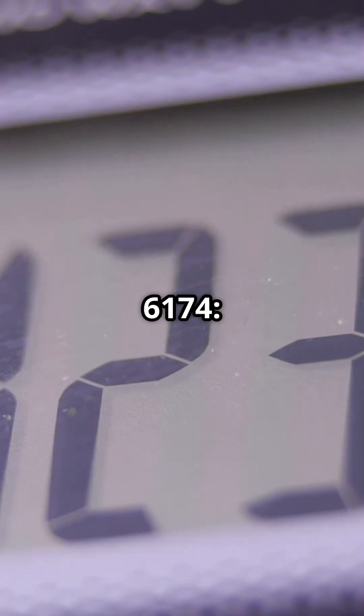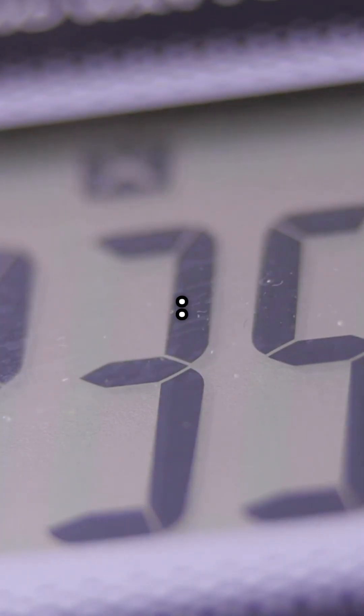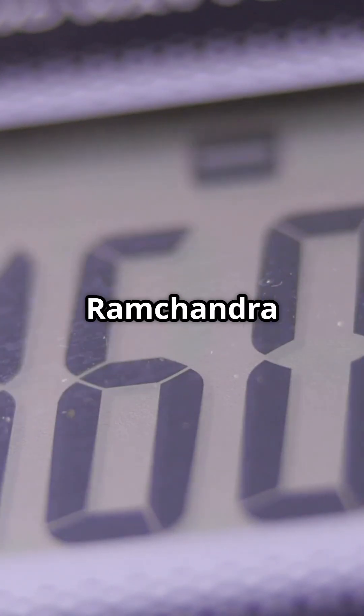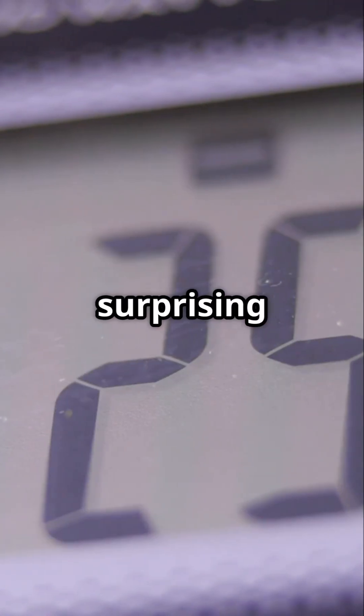The number 6174, Kaprekar's magic number, discovered in 1949 by Indian mathematician Datathreya Ramchandra Kaprekar. This number has a surprising property.